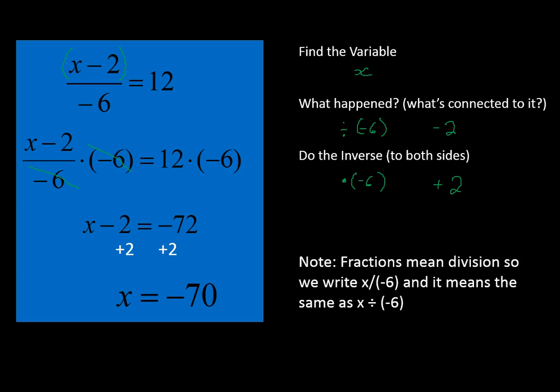Again, we can check our work: negative 70 minus 2 divided by negative 6 equals 12. And if that checks out, then we have solved our equation correctly.